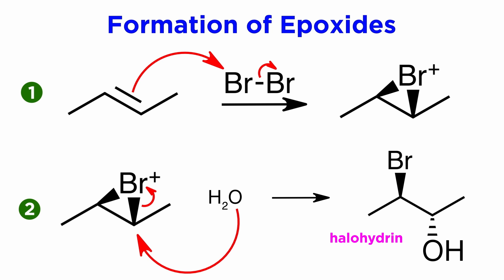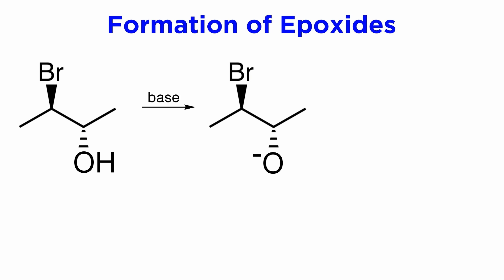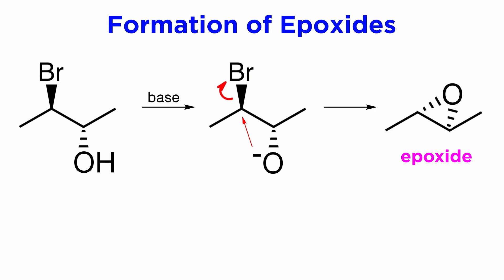Another way to get an epoxide is to form a halohydrin, which means a hydroxyl and a halogen on adjacent carbons. This can form when performing halogenation in the presence of water, as water can attack the intermediate instead of the halide ion to produce the halohydrin. Then base can be used to deprotonate the hydroxyl, and the resulting oxyanion can attack the carbon that bears the halogen in SN2 fashion, since the stereochemistry allows for the backside attack, and the halogen is kicked off, yielding the epoxide.